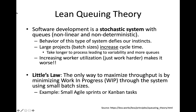But the problem was that the larger the project was, the larger the cycle time became. As projects got larger, it took longer and longer to actually get code deployed to a production environment. What lean queuing theory shows and actually proves is that large batch sizes increase cycle time — it makes it actually harder to get work done. As we increase the utilization of individual software developers, it actually makes our cycle time worse.